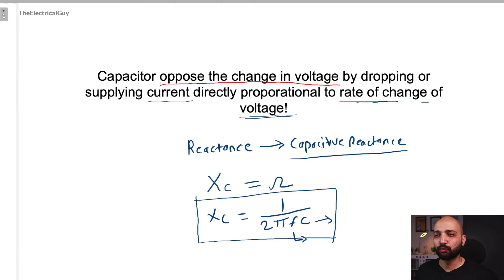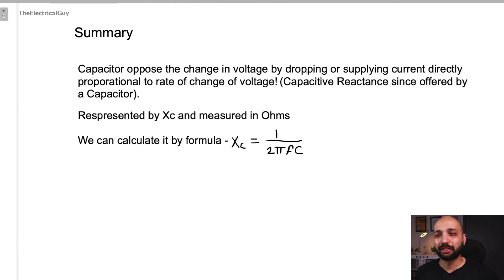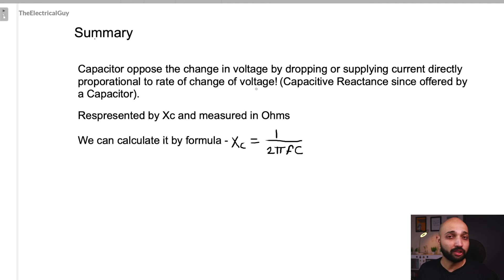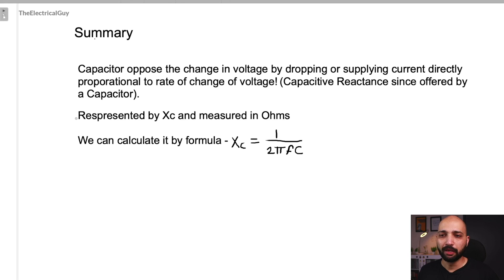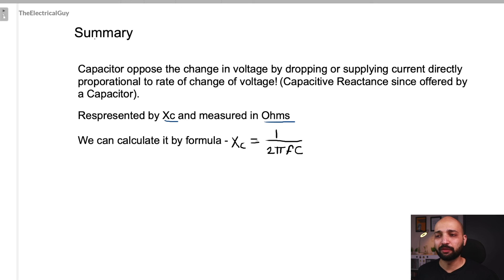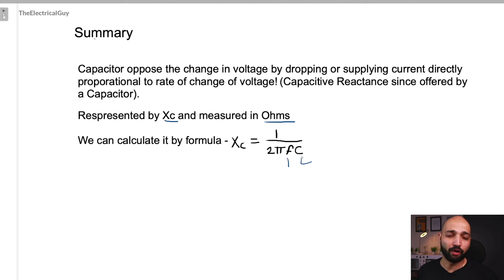Let us quickly summarize the video. We saw that the capacitor opposes the change in voltage by dropping or supplying current, which is directly proportional to the rate of change of voltage. Since this opposition is specifically offered by a capacitor, we call it capacitive reactance. It is represented by letter Xc and measured in ohms. We can calculate it using the formula Xc = 1 divided by 2πfc, where f is frequency and C is the capacitance.